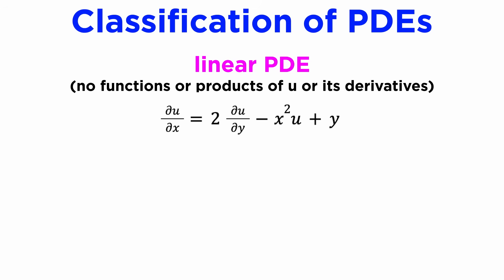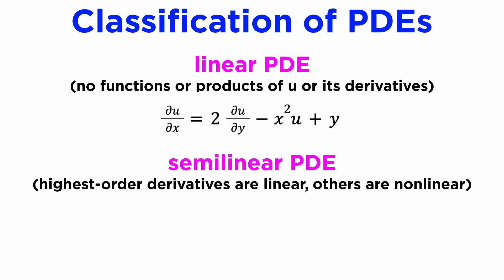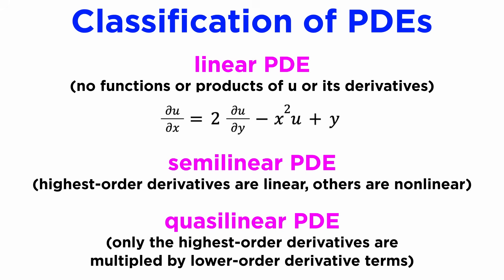There are also two other terms we should know describing types of nonlinear PDEs. A PDE is semi-linear if only its highest order derivatives are linear, while the others may be nonlinear. A PDE is quasi-linear if only its highest order derivatives are multiplied by lower order derivative terms.